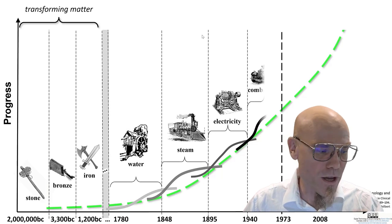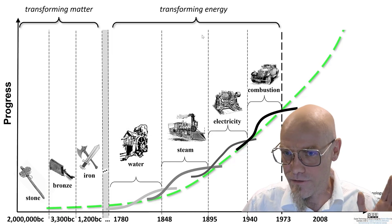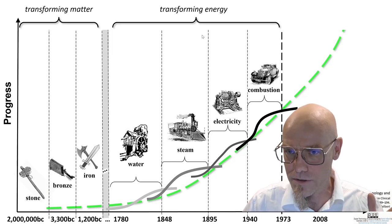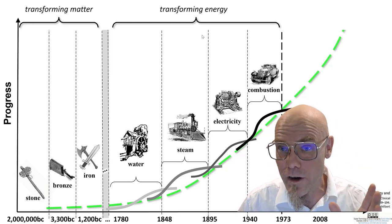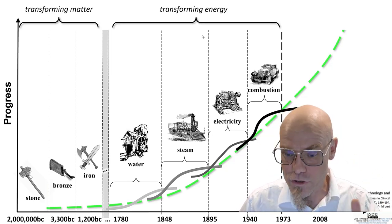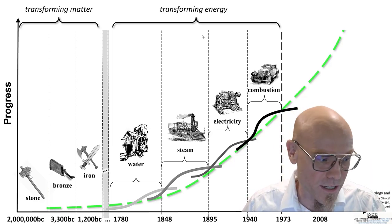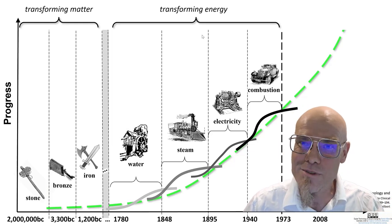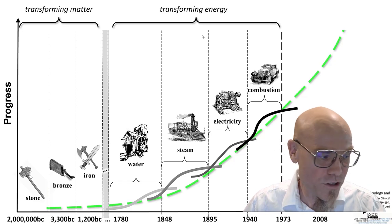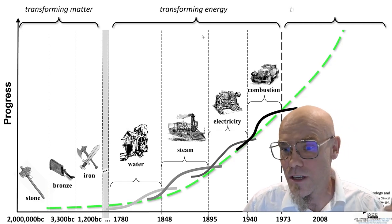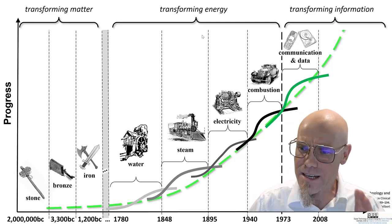Then came a period where we started to learn how to transform energy. First with fire — fire was a precursor. These waves started very slowly. Then came water with the mills, then ships. Steam was very important, then electricity, and then the combustion engine. We are still dealing with some of the fallout of that revolution hundreds of years later. And now the third paradigm is learning how to transform information — from transforming matter, to energy, to information. That is very important.